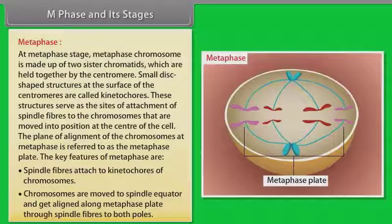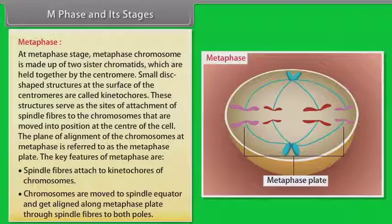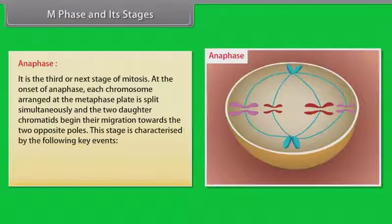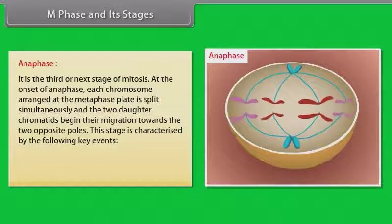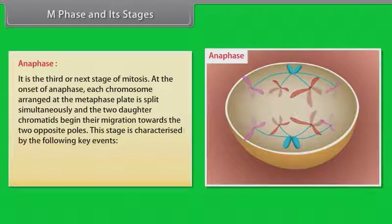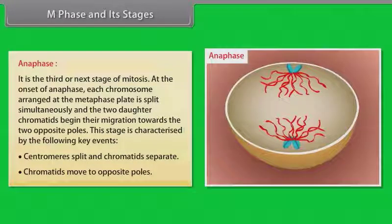The next stage of mitosis is anaphase. At the onset of anaphase, each chromosome arranged at the metaphase plate is split simultaneously and the two daughter chromatids begin their migration towards the two opposite poles. This stage is characterized by the following key events: centromeres split and chromatids separate, and chromatids move to opposite poles.